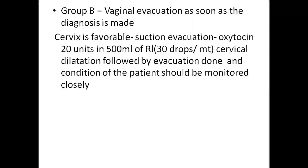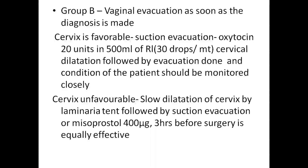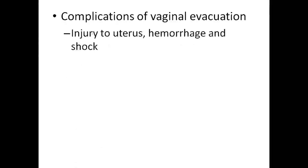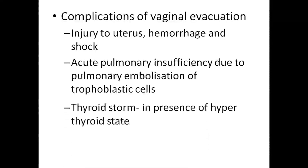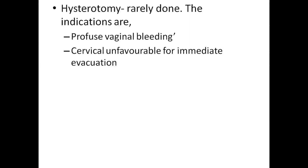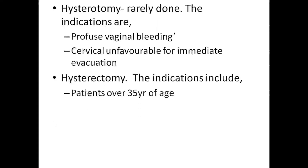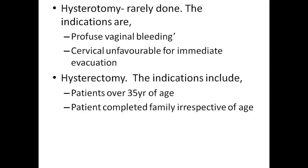Group B: vaginal evacuation as soon as the diagnosis is made. If the cervix is favorable, suction evacuation with oxytocin 20 units in 500 mL, cervical dilatation followed by evacuation done, and the patient's condition should be monitored closely. If the cervix is unfavorable, slow dilatation of cervix by laminaria tent followed by suction evacuation; misoprostol 400 mcg 3 hours before surgery is equally effective. Complications of vaginal evacuation include injury to the uterus, hemorrhage and shock, acute pulmonary insufficiency due to pulmonary embolization, and thyroid storm in the presence of a hyperthyroid state. Hysterotomy indications include profuse vaginal bleeding and unfavorable cervix. Hysterectomy indications include patients over 35 years of age and patients who have completed their family.